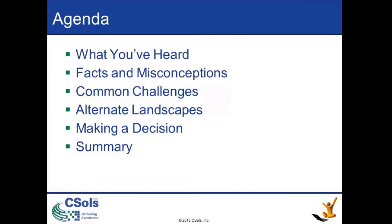We're going to start the webinar by going through some statements you've likely heard from colleagues, associates in other companies, or even while attending conferences and trade shows. We're going to take some of the most important statements and attempt to separate the fact from the fiction. We'll then identify common challenges being faced by both SAP and LIMS vendors and describe their different approaches in solving those challenges. We'll then move into a discussion on the many different alternate landscapes that have been implemented in the industry, describe them in detail identifying characteristics that contributed to their success, and then describe the most salient factors that need to be addressed in order to make a decision — and finally summarize the essence of this presentation.